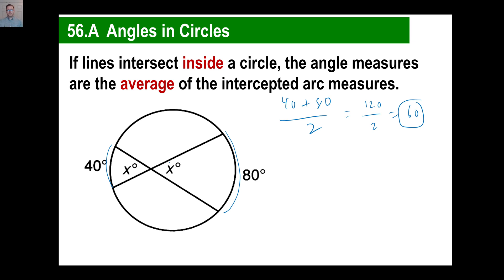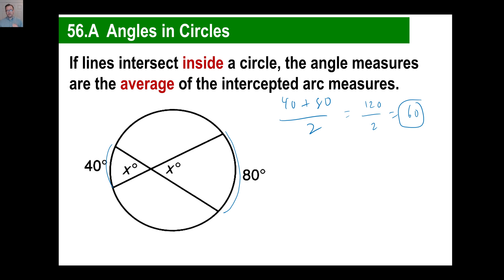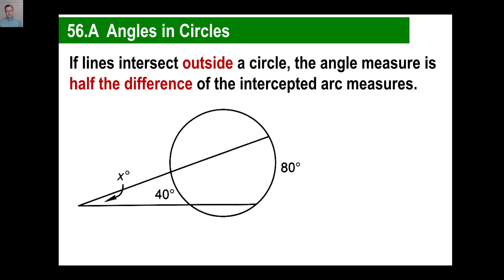The second thing, if they intersect outside of the circle, look at those two lines, they're intersecting outside the circle. Then the angle measure is not, you don't add 40 and 80 then divide by 2 this time. What you do is you go 80 minus 40 and divide by 2. If they're inside the circle, you go 80 plus 40 divided by 2. If they intersect outside the circle, you go 80 minus 40, and then divide by 2. And of course, 80 minus 40 is 40, divide by 2 is 20 degrees. So this x is going to be 20 degrees.